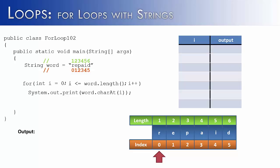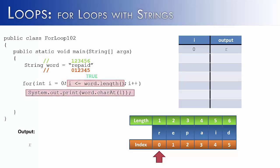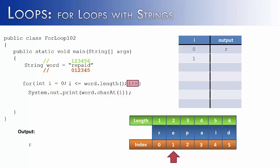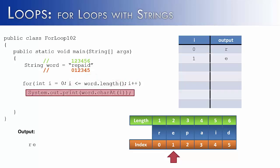Tracing through the loop: we start at zero, check the condition — zero is less than the length, so true. We go into the print statement and print the character at i, which is 'r'. We increment i to 1, check the condition — true — and print the character at index 1, which is 'e'.